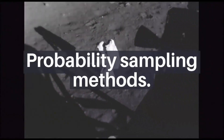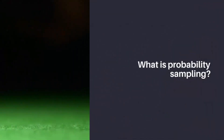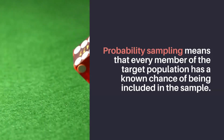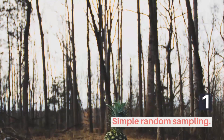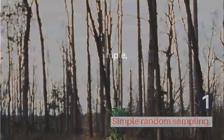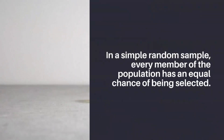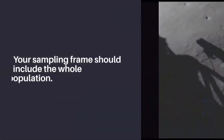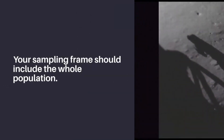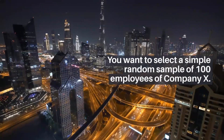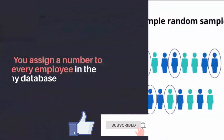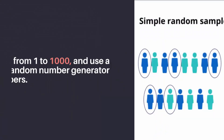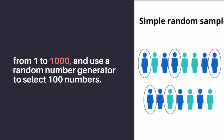Probability sampling methods. What is probability sampling? Probability sampling means that every member of the target population has a known chance of being included in the sample. There are four main types of probability sample. 1. Simple random sampling. In a simple random sample, every member of the population has an equal chance of being selected. Your sampling frame should include the whole population. For example, you want to select a simple random sample of 100 employees of company X. You assign a number to every employee in the company database from 1 to 1,000, and use a random number generator to select 100 numbers.